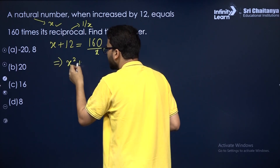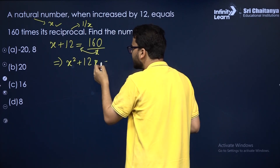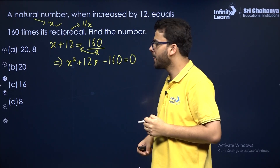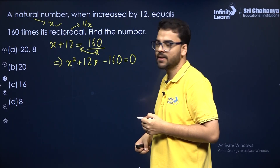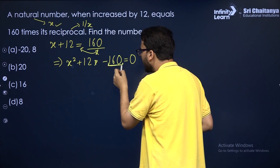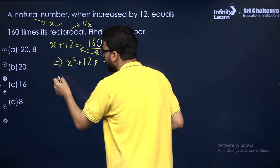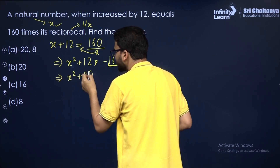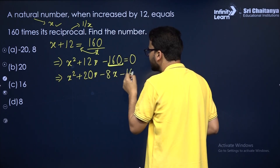Cross multiplying gives X² + 12X = 160, so X² + 12X − 160 = 0. To factorize, note that 12X = 20X − 8X, giving X² + 20X − 8X − 160 = 0.